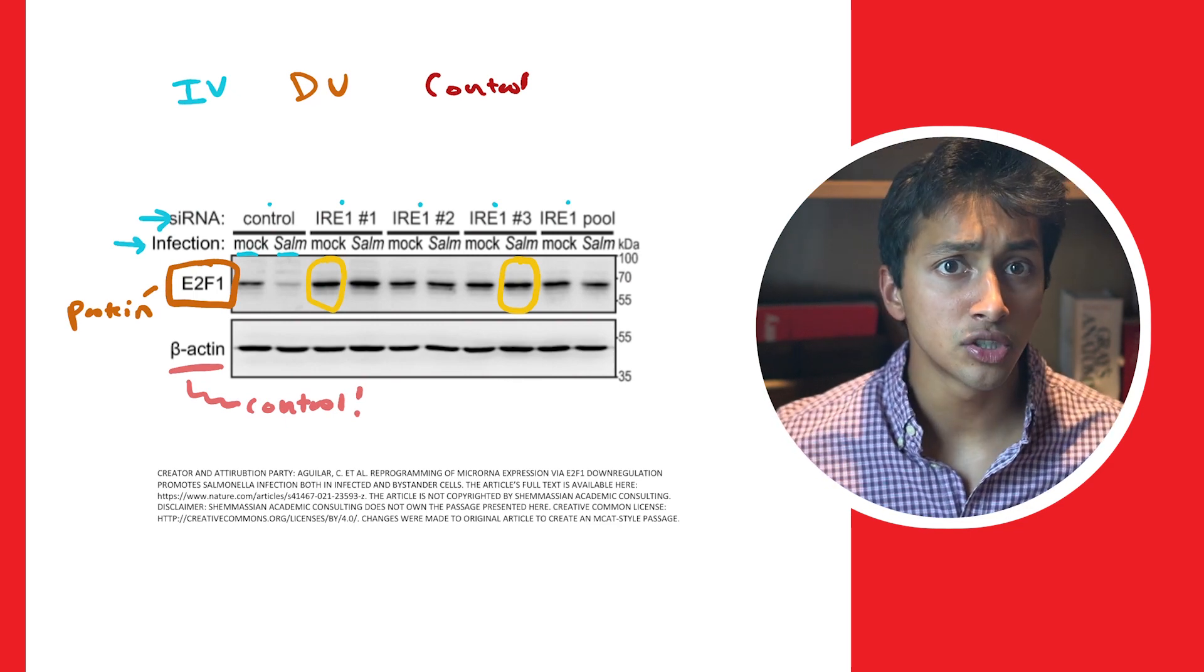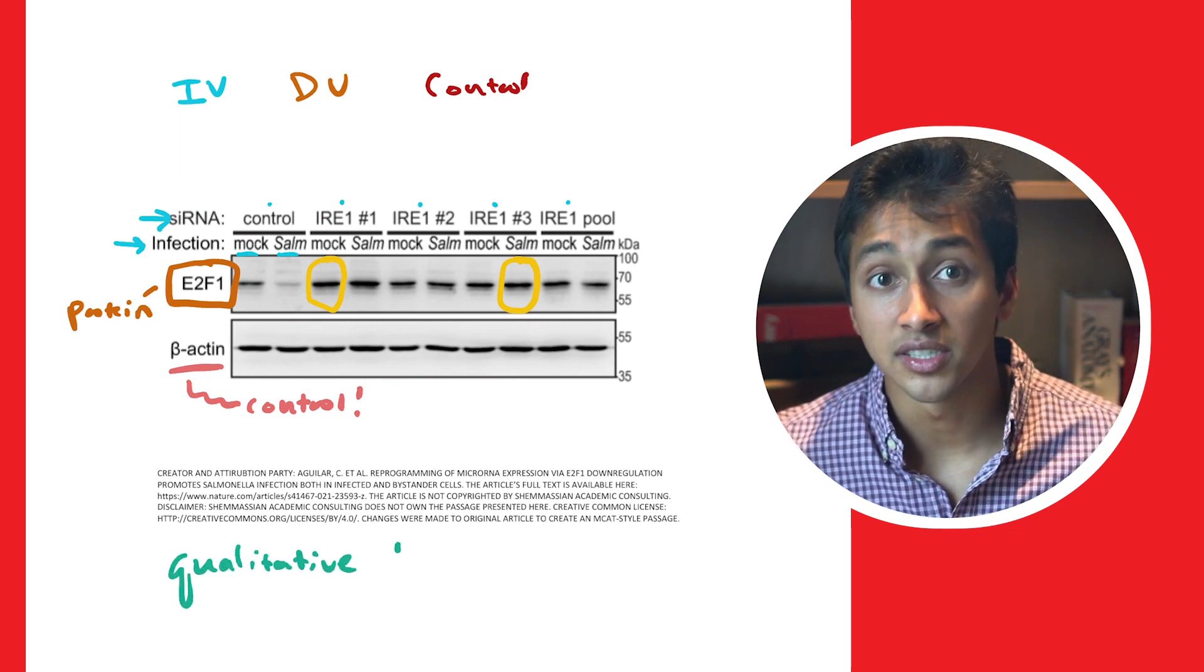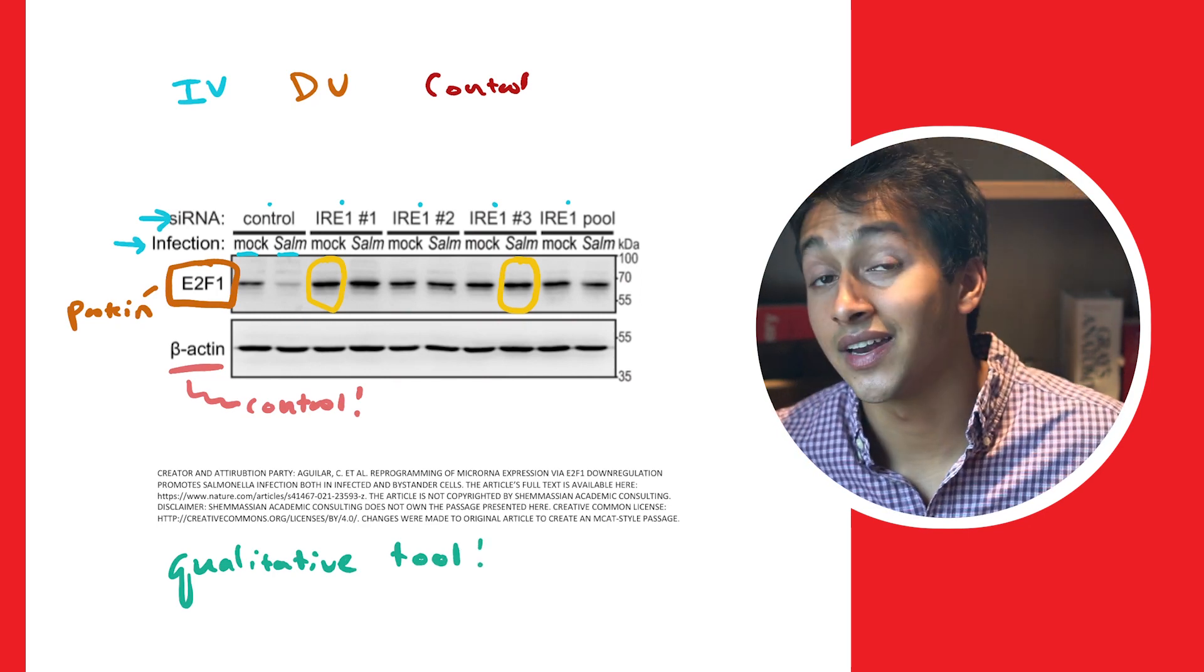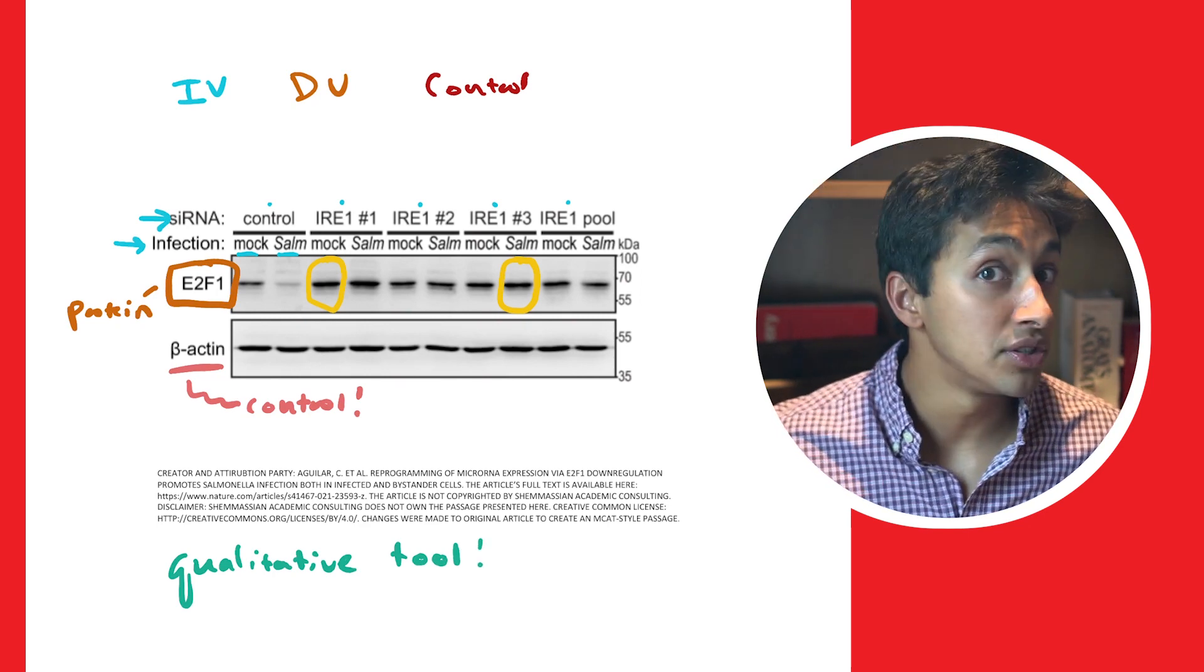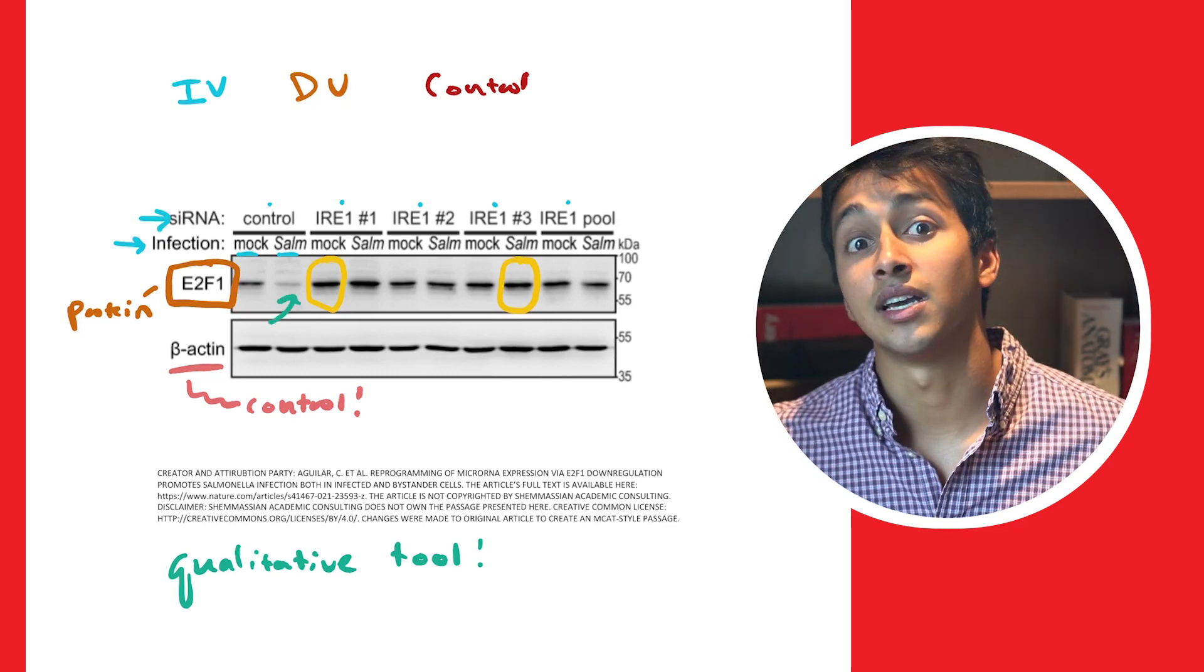While some researchers use Western blot to quantitatively measure information, it's generally used as a qualitative tool. We can visually see, without needing numbers or to count individual pixels, that the protein expression level is lower for the control salmonella condition compared to the other conditions.